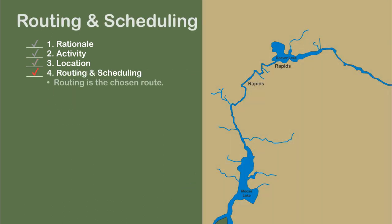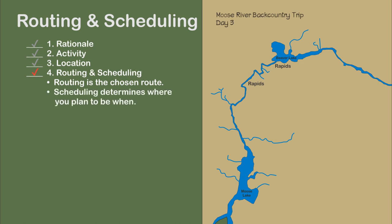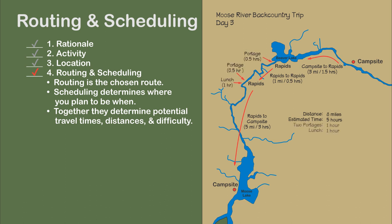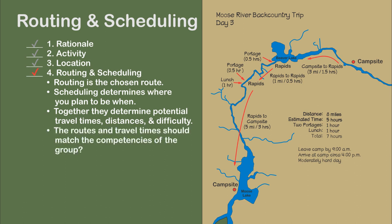Routing determines travel times, distances between campsites, and the difficulty of the day's travel. The trip leader planned for day three of their backcountry trip, figuring they travel two to two and a half miles per hour. He calculates distances and times, identifies portages and the lunch stop below the portage — roughly a seven-hour day. If they leave camp by nine o'clock in the morning, they should arrive at four o'clock in the afternoon, on what he estimates to be a moderately hard day of paddling.